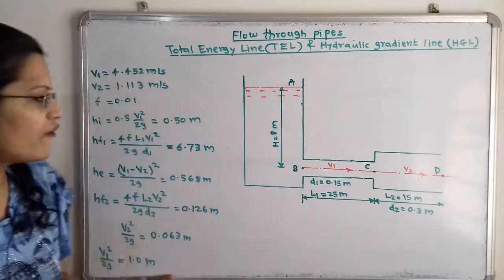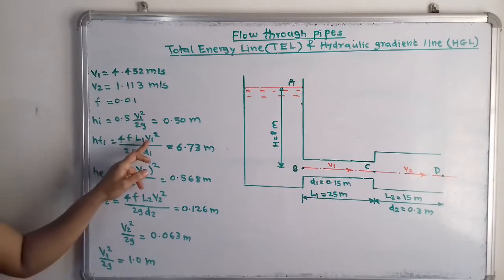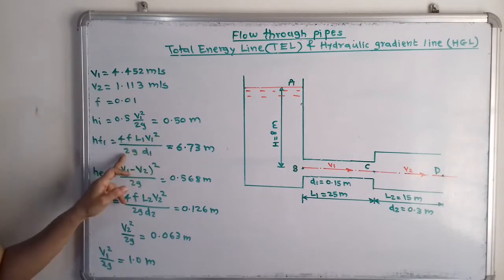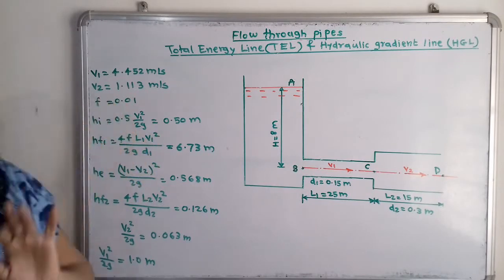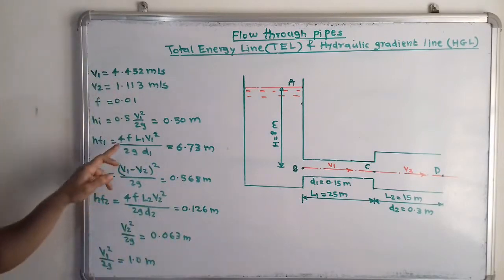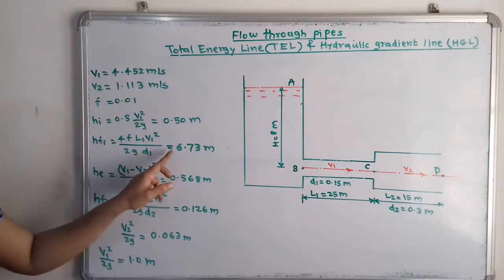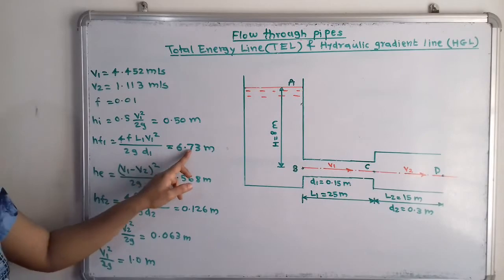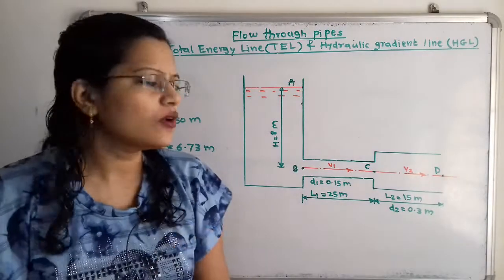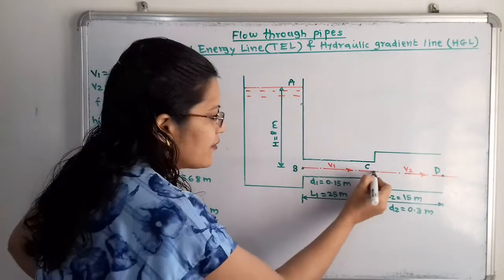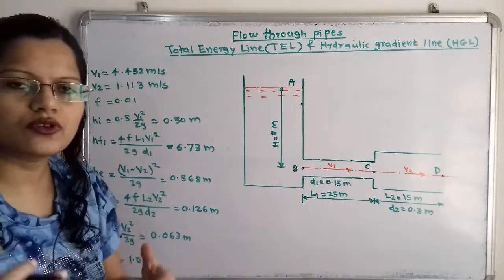Next, we calculate the loss due to friction in pipe one. The formula is: hf1 = 4f × l1 × v1² / (2g × d1), where f is the coefficient of friction and it is given. When we put in all the values, hf1 = 6.73 meters.